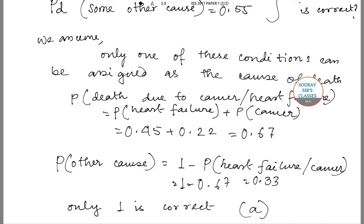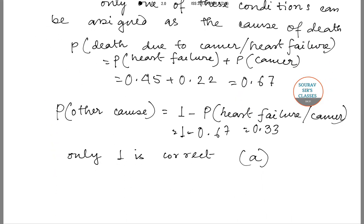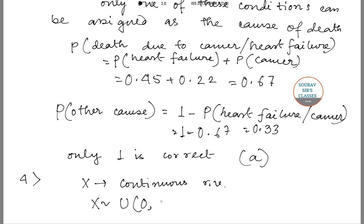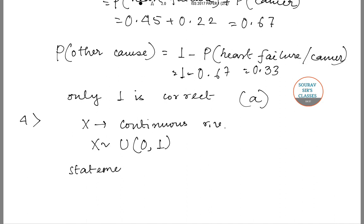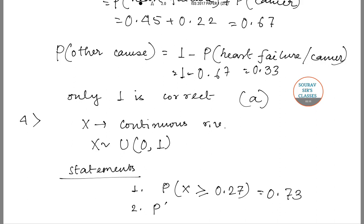Now let's move on to question number 4. We are given that X is a continuous random variable that follows a uniform distribution with parameters 0 and 1. We are given two statements: Statement 1 says P(X ≥ 0.27) = 0.73, and Statement 2 says P(0.27 < X < 1.27) = 0.73. We are asked which of these is correct.